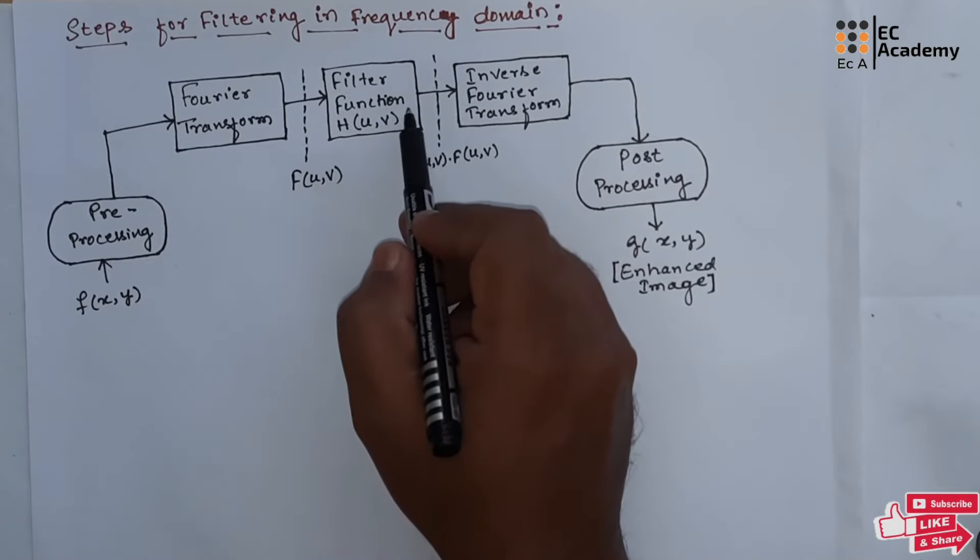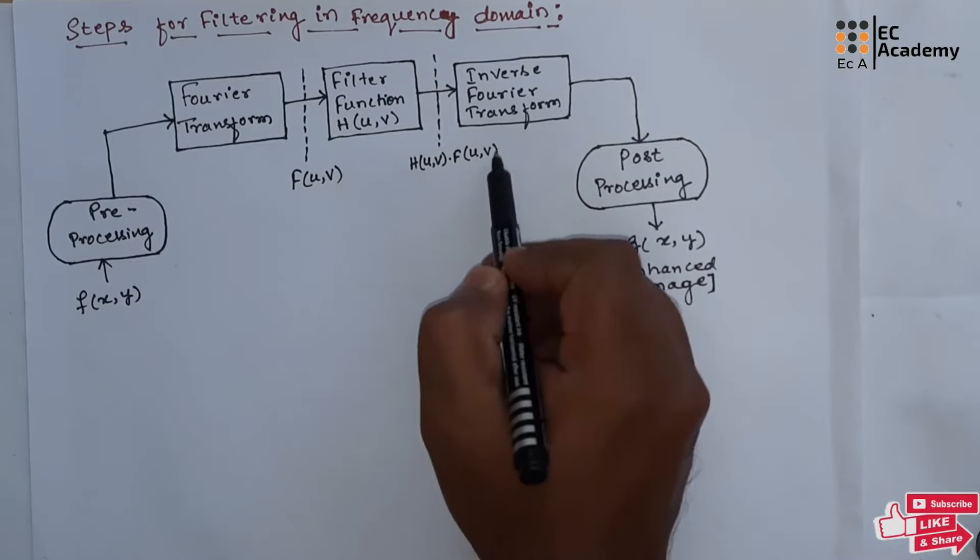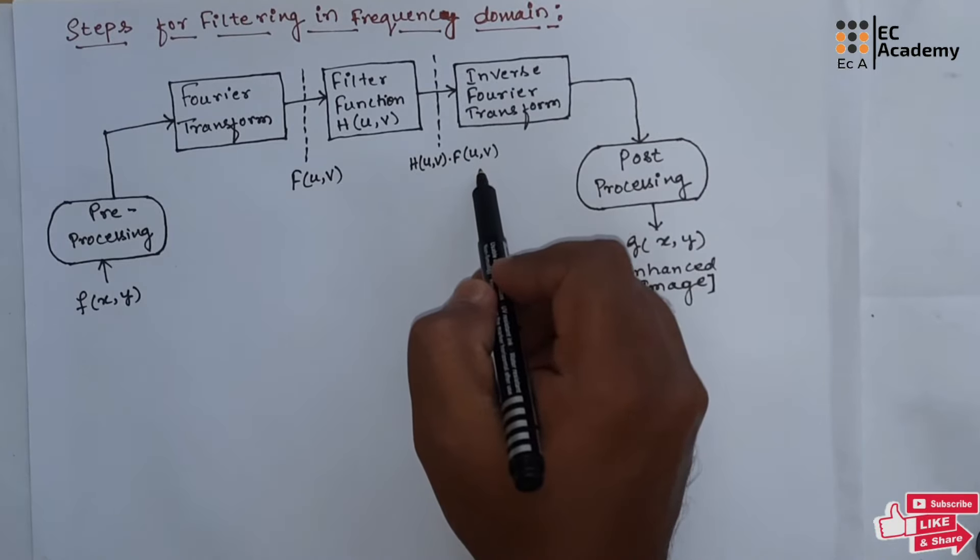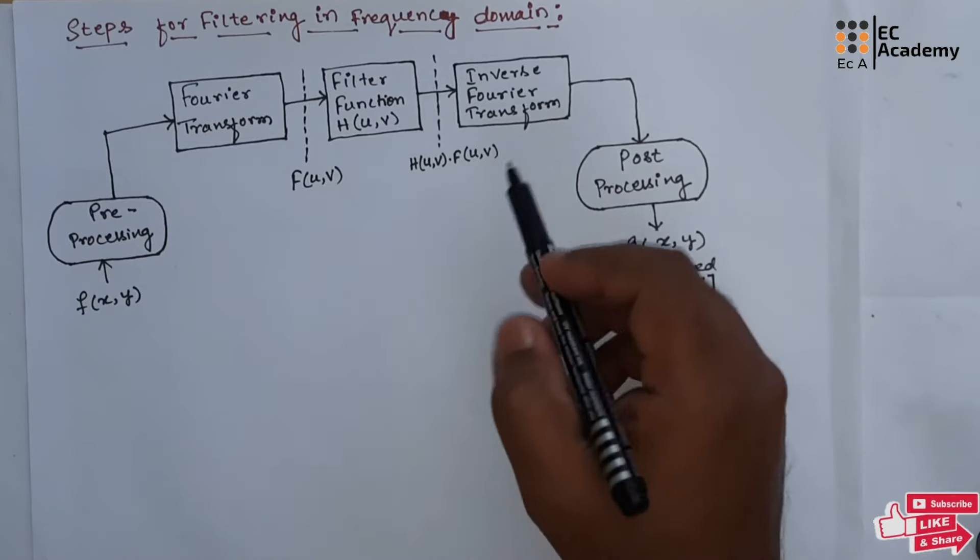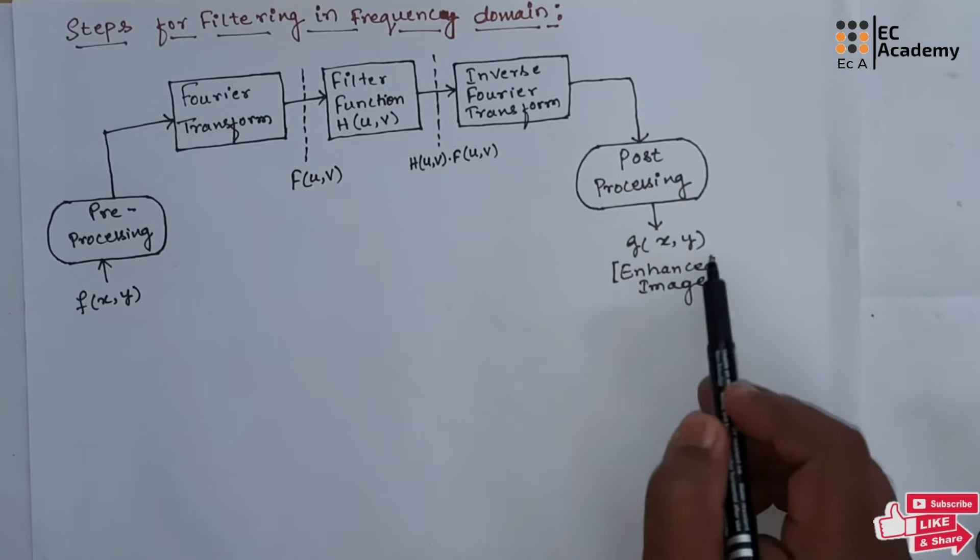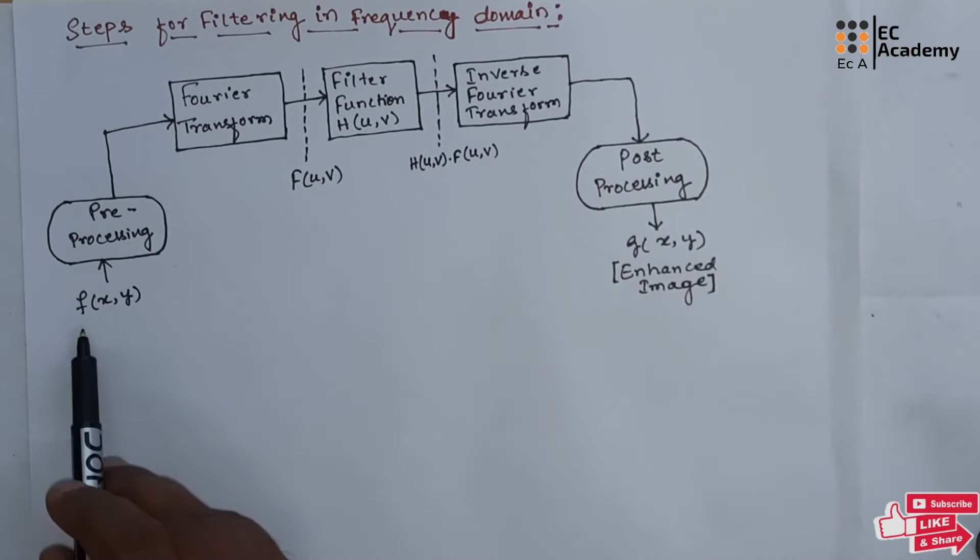For this Fourier transform, filtering function h of u, v is multiplied to get the function h of u, v into f of u, v. Once the processing is done, the inverse Fourier transform is performed to get the value g of x, y which is the enhanced image of f of x, y.